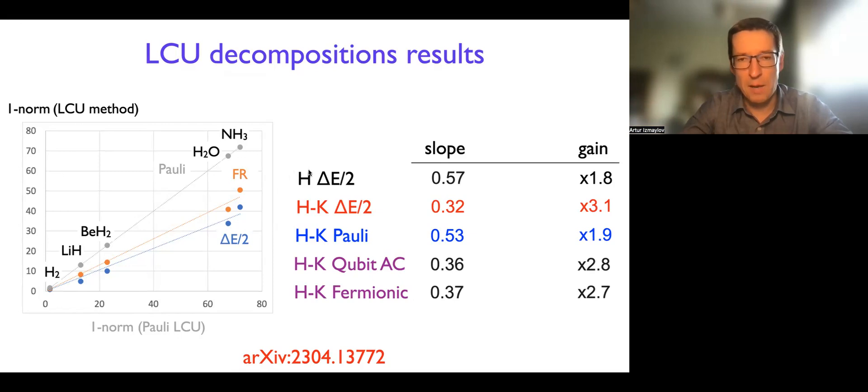And so here we can see that compared to the Pauli LCU for the Hamiltonian, what are the slopes of different methods, the lower the slope, the better, right? And so this is absolute lowest slope for the Hamiltonian because of the spectral range, right? So it gives the gain of roughly two in the cost of the LCU quantum phase estimation scheme. And now if you subtract the K, then the spectral range gets even lower slope. This is absolutely the best you can get. No grouping will be able to beat this, right? So this is as much as you can squeeze out of this technique.